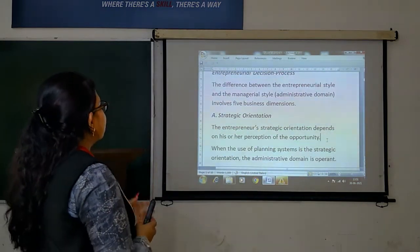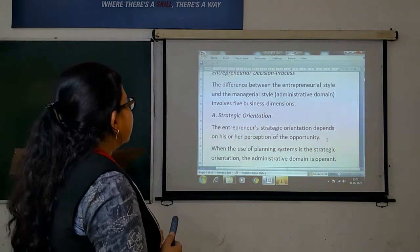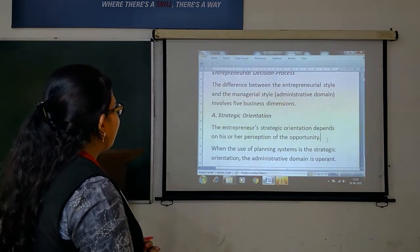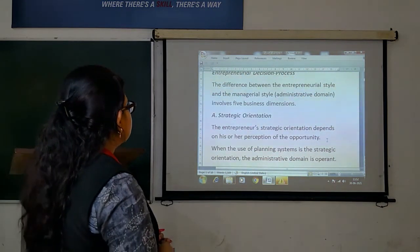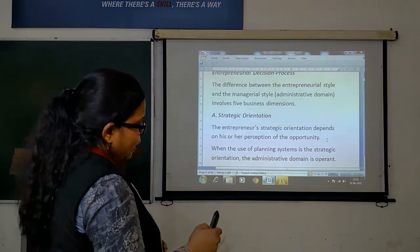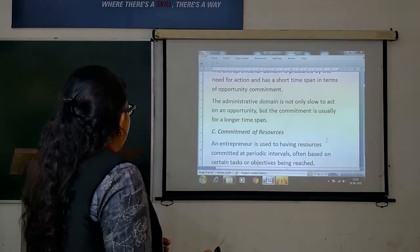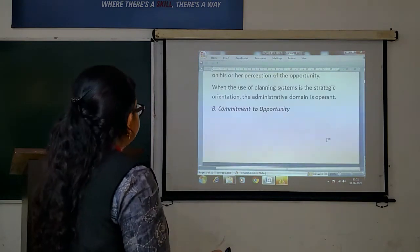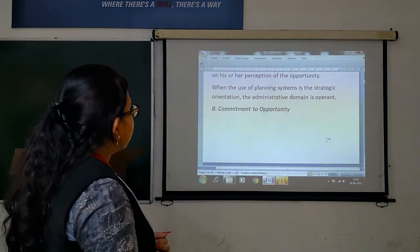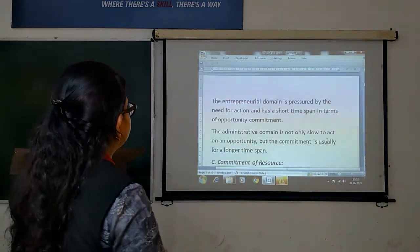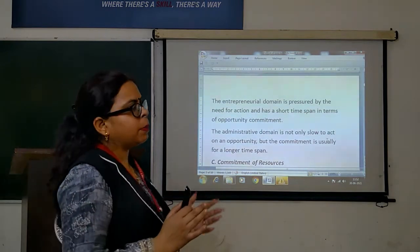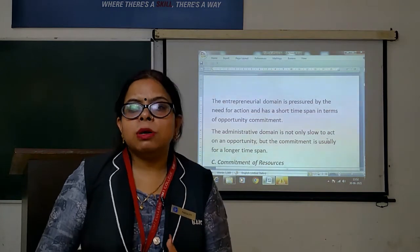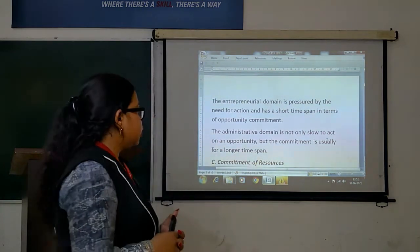An entrepreneur's orientation means on a third section of opportunity. When the use of planning system is the strategy oriented, the administrative domain is operant. The next step is commitment to opportunity. If you have the opportunity and the commitment, the time gap is fulfilled, then it will be a better situation.